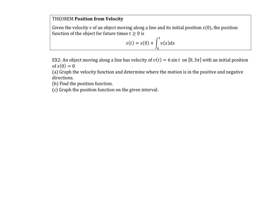This theorem is called position from velocity. If you have the velocity and an initial position s(0), then to get your position function all you have to do is integrate the velocity and add the initial position.